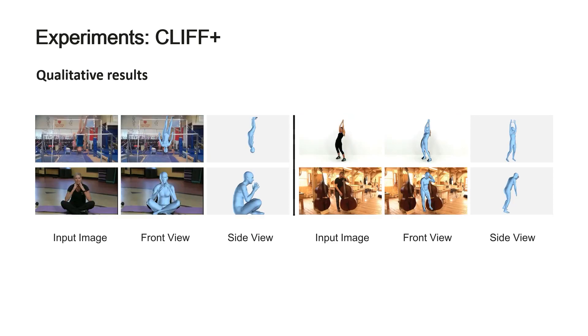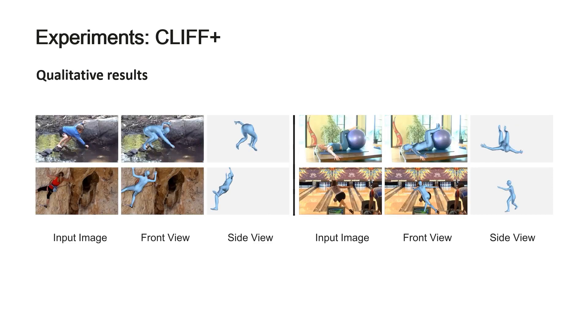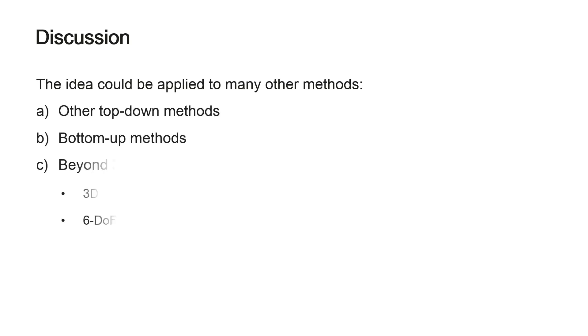The reconstructed meshes are pixel aligned to the image evidence. From the side view, we can see that they are also perceptually realistic. We show how to build CLIFF based on HMR by making two modifications. We believe that the idea can also be applied to many other methods.